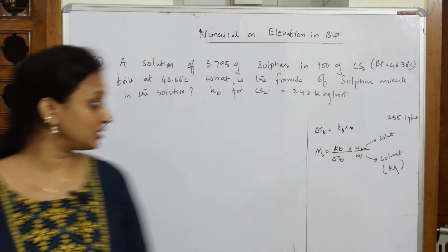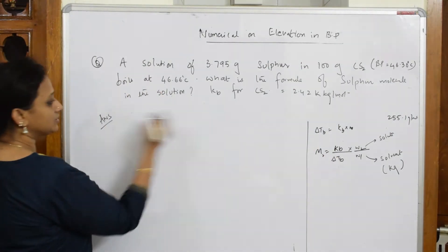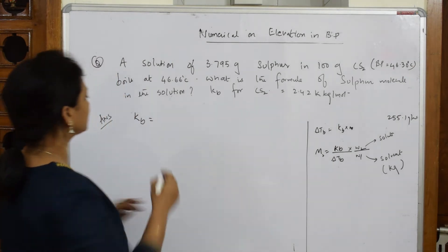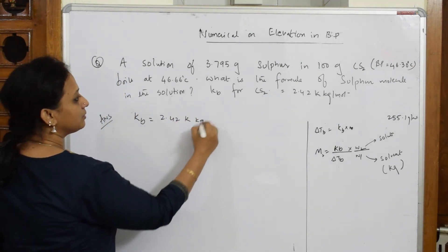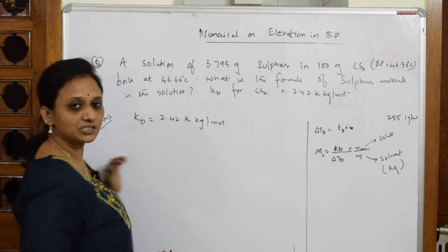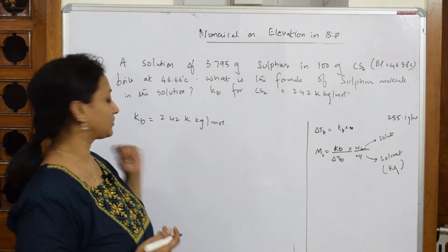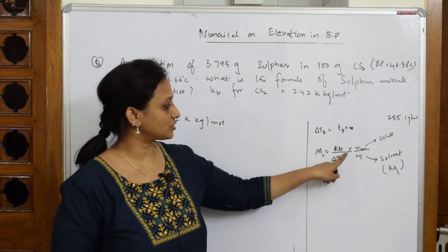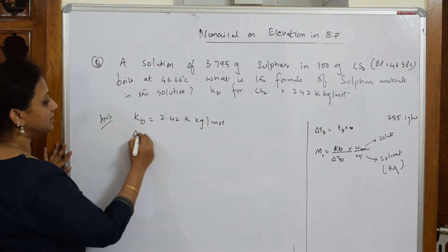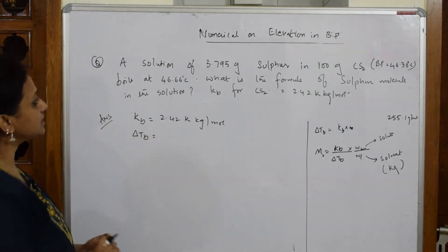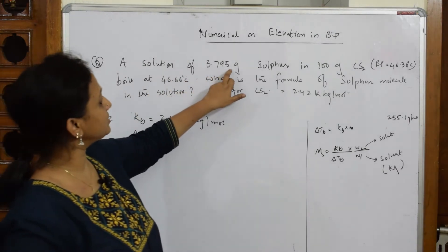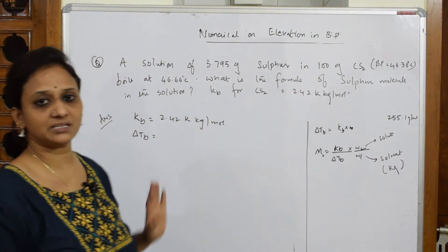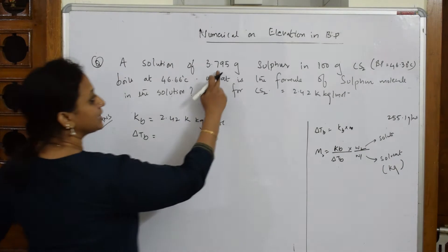So let's come back and see. Now here, first of all, I have to see what is given. Kb, whether Kb is given to me or not in the sum. Kb is given to me, okay, 2.42 K kg by mole. That's the unit for your ebullioscopic constant. Done. After that, next what should I have? I should have delta Tb. A solution of 3.795 grams of sulfur, okay, the solute is dissolved in 100 grams of carbon disulfide, that is the solvent, because this is in minor quantity, this is a major quantity.